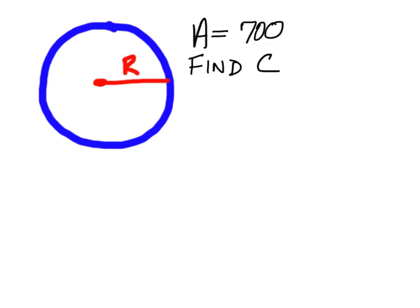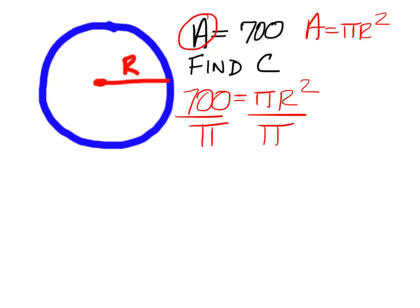You're given area, and since area is pi r squared, you're going to plug in 700 for A. So 700 equals pi r squared, and you divide both sides by pi so that you can get the r squared by itself.